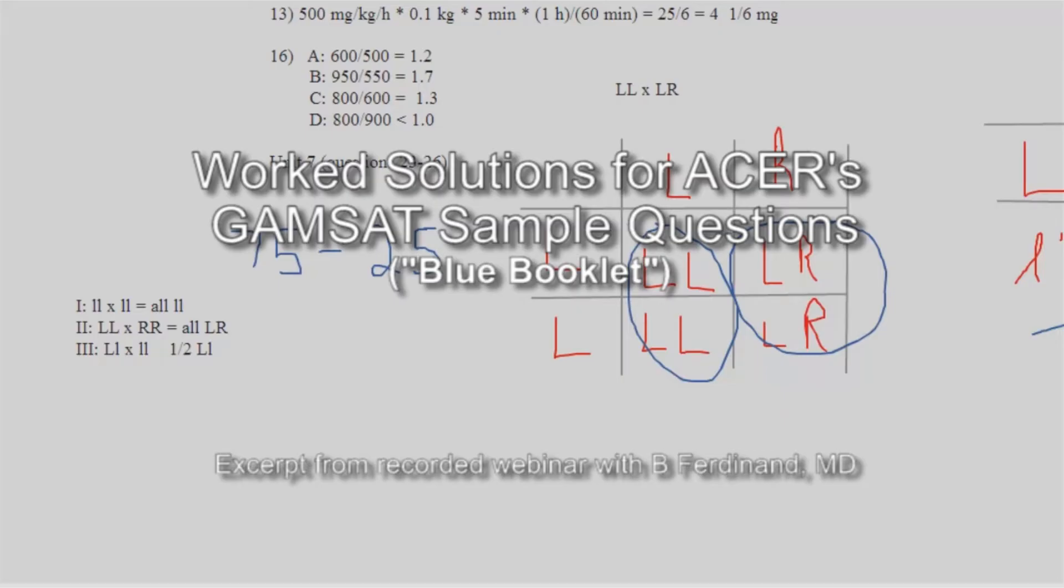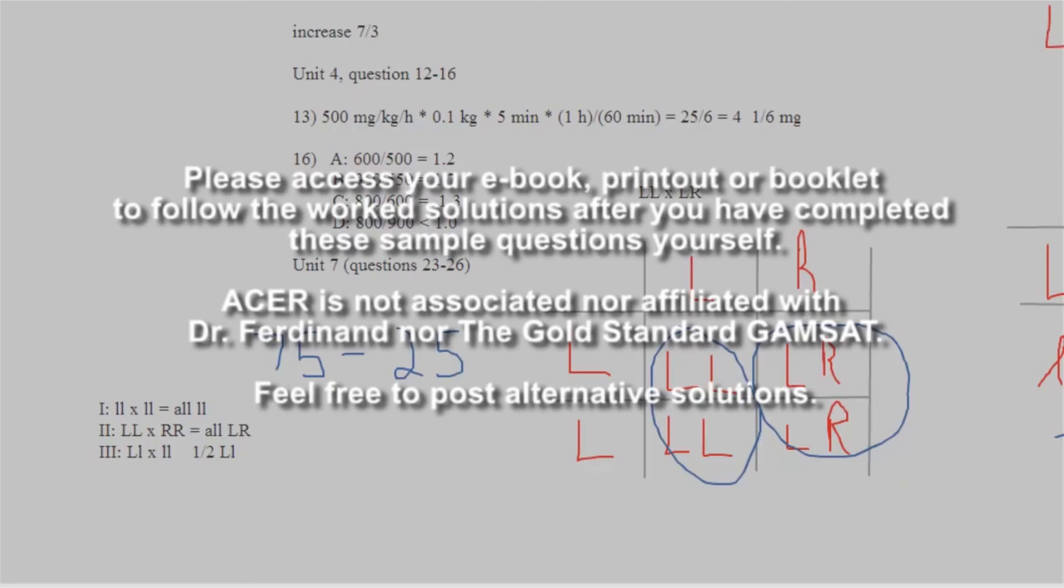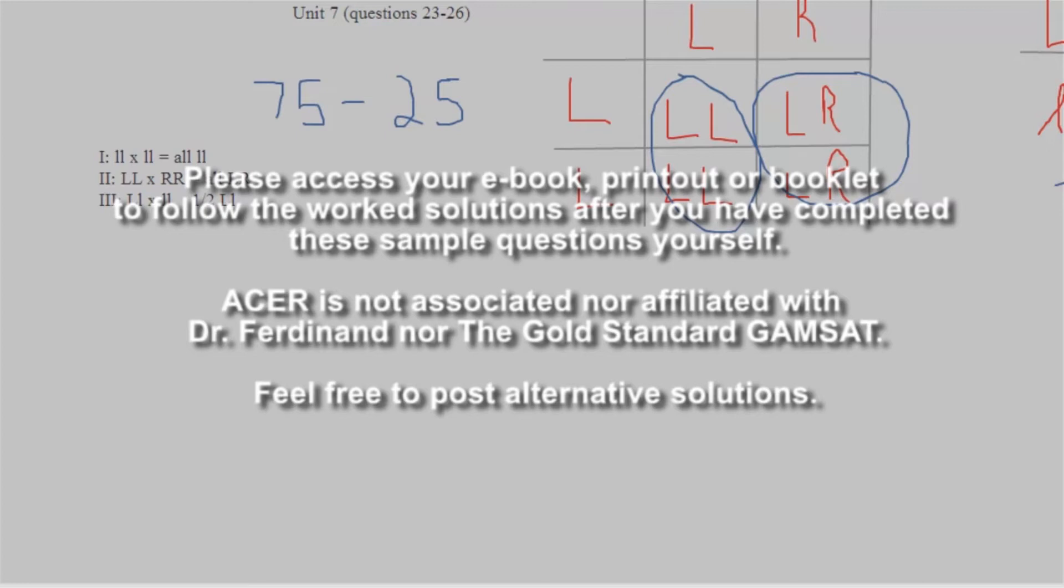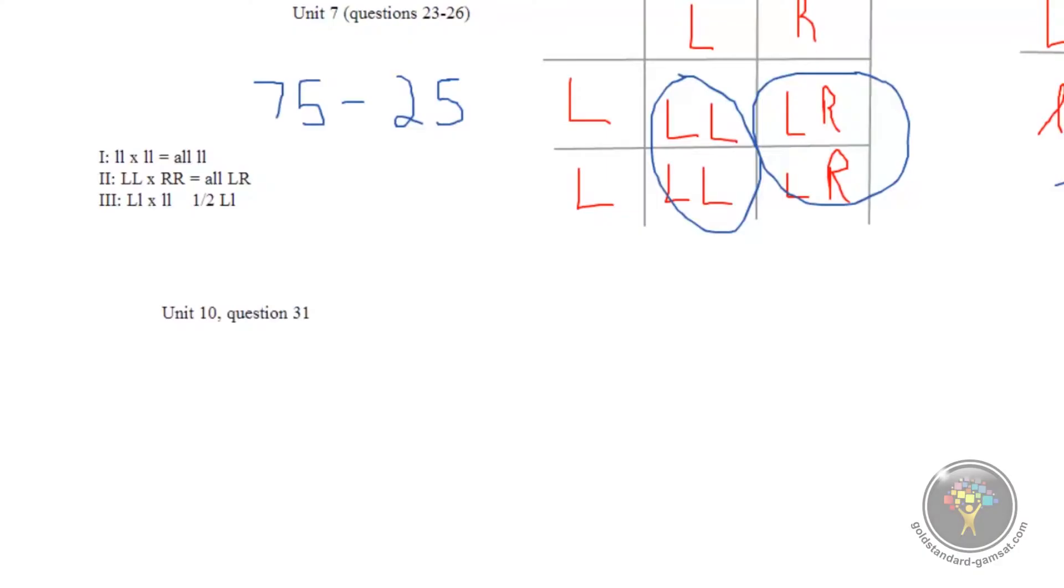Next is unit number 10. Please expect a question on the GAMSAT to do with osmosis or diffusion or something like that, because there's usually one question about this topic. This particular one is asking about isotonic or isosmotic.